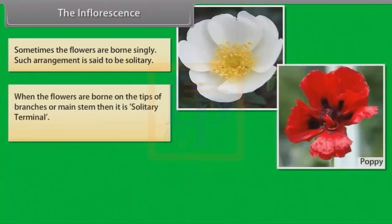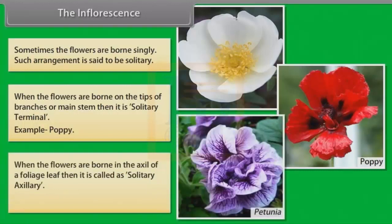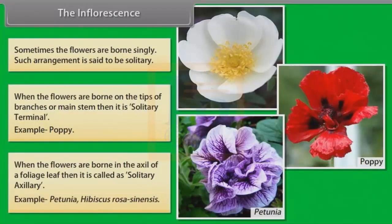When the flowers are born on the tips of branches or main stem then it is solitary terminal. Example: Poppy. When the flowers are born in the axil of a foliage leaf then it is called as solitary axillary. Example: Petunia, Hibiscus Rosa Sinensis.